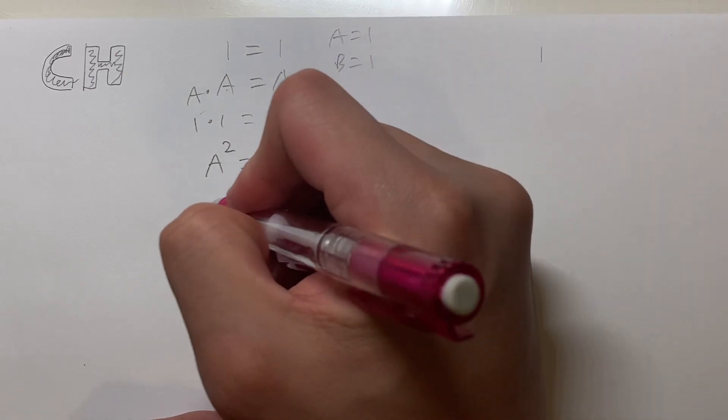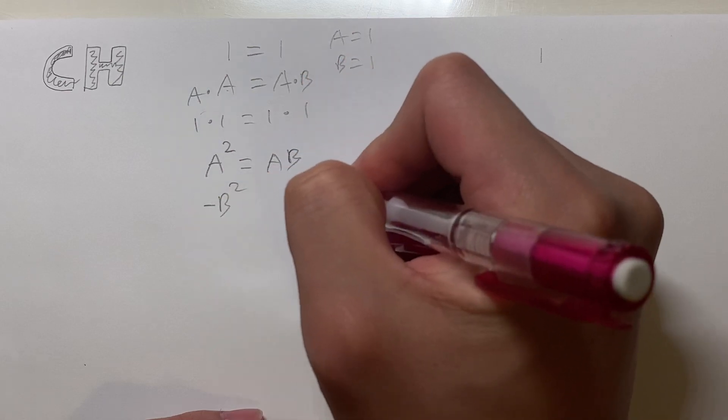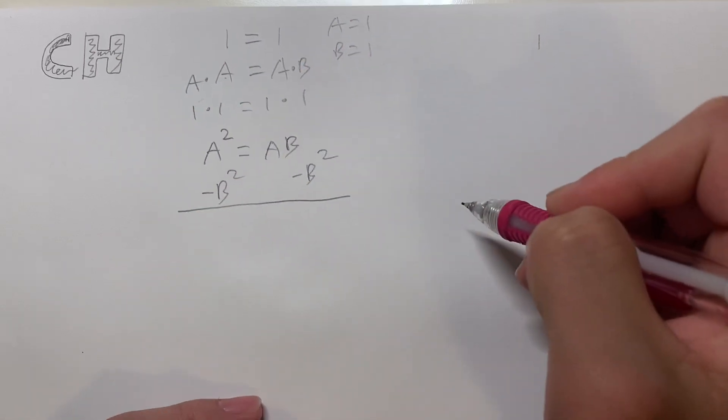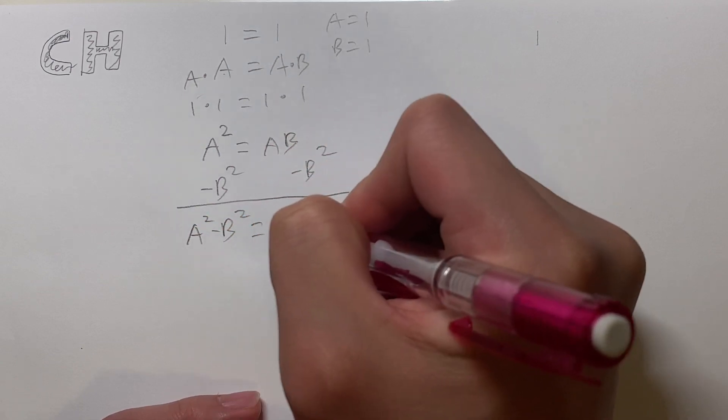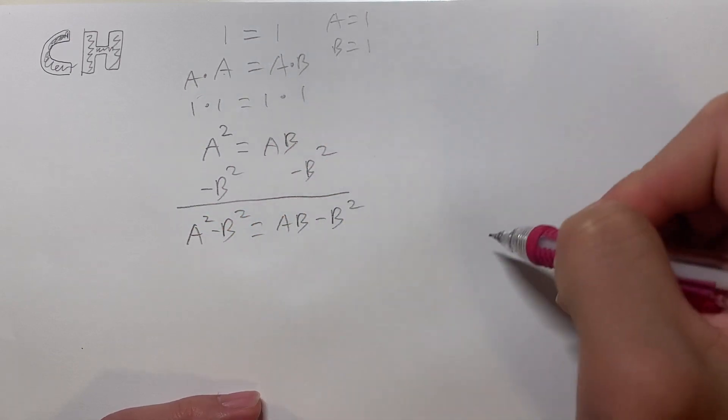Next, what I'm going to do is I'm going to subtract B squared on both sides. Now, if I subtract B squared on both sides, I'm going to end up with A squared minus B squared on the left side is equal to AB minus B squared on the right side.